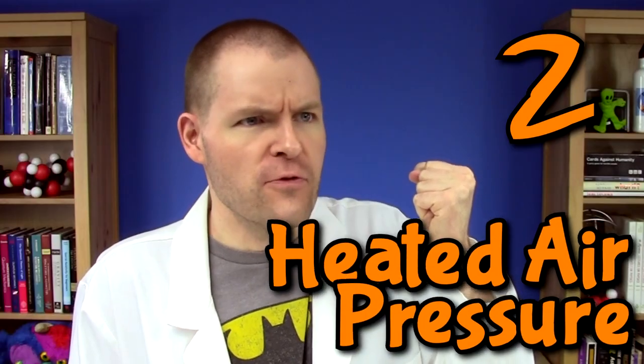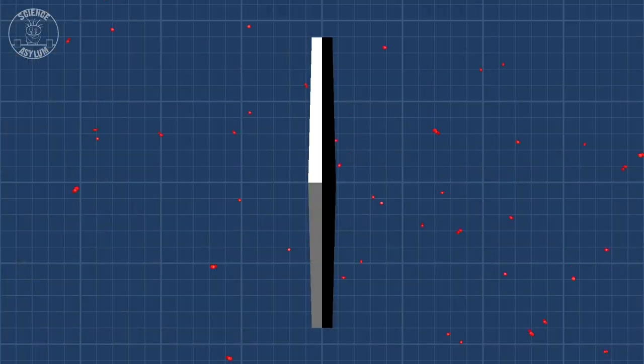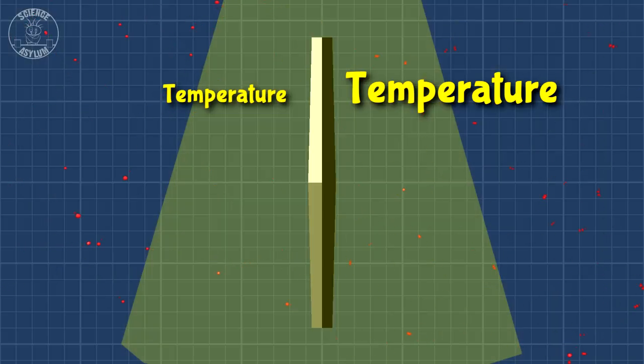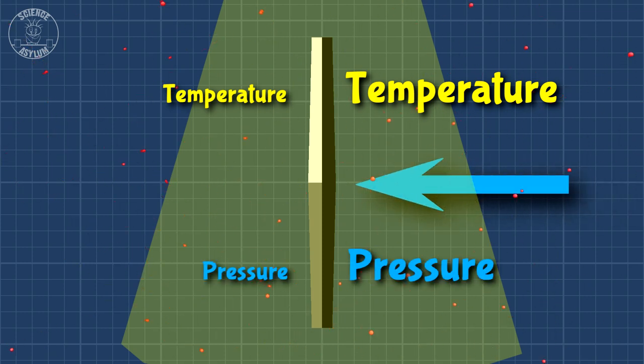Option 2, pressure from heated air. A standard Crookes radiometer does have air. Only a little bit, but it's there. The air gets heated near the veins, but more so on the black side. The temperature increase causes a pressure increase, and that pressure pushes the veins forward.